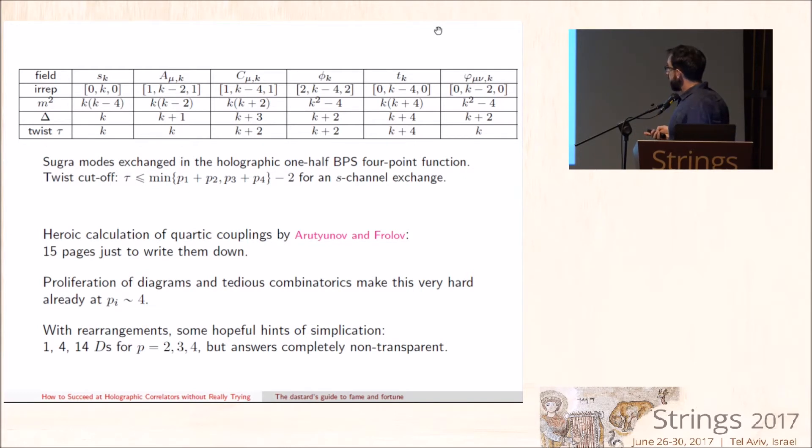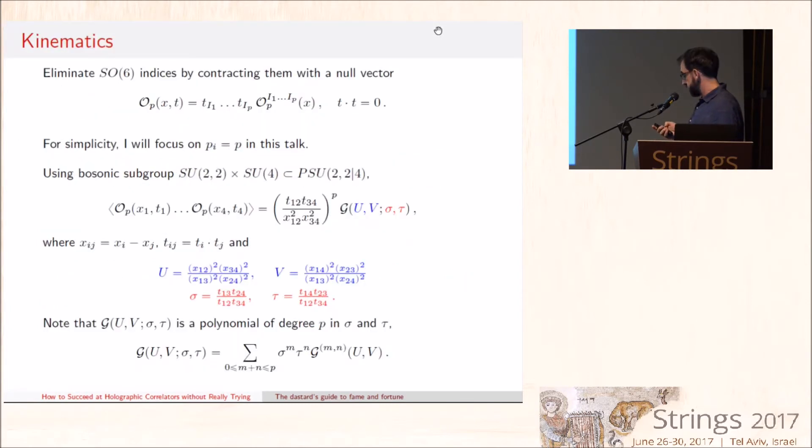Why is that? Because what these correlation functions are encoding is just on-shell Type IIB supergravity, which is uniquely fixed by the fact it's two-derivative supergravity theory and by maximal supersymmetry. And so we try to implement the symmetries directly. Then I will have to tell you a little bit about kinematics of how to efficiently encode the symmetry structure. This has been known for a long time.